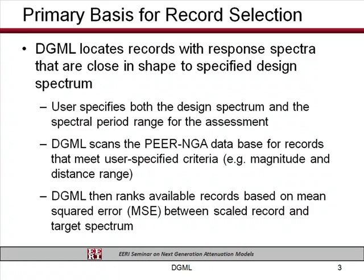The user first specifies a design spectrum, and I'll go through how — there's a variety of ways to do that. The DGML software then scans the database and selects records that meet criteria specified by the user, such as magnitude range, distance range, VS30, and so forth. It then compares the records' response spectra with the target spectra and calculates the mean difference — the mean squared error difference between those two spectra — and ranks the records by the mean squared error, telling you which records have response spectra closest to your design spectrum.